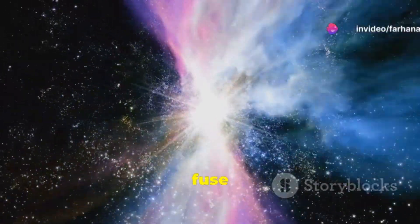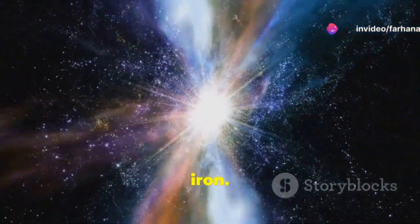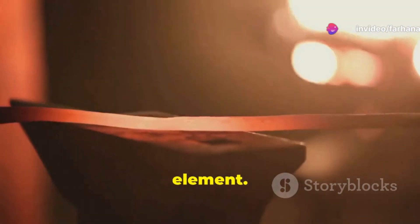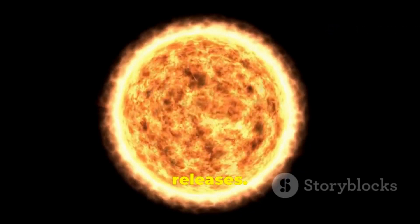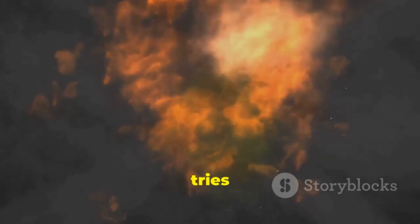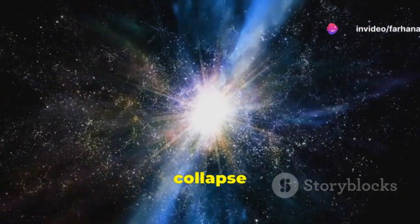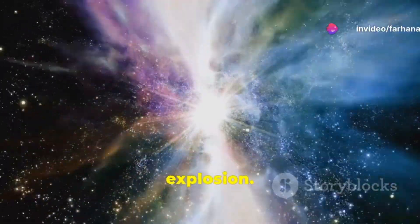The most massive stars can fuse elements all the way up to iron. Iron is the most stable element. Fusing iron requires more energy than it releases. When a massive star tries to fuse iron, it collapses under its own gravity. This collapse triggers a supernova explosion.